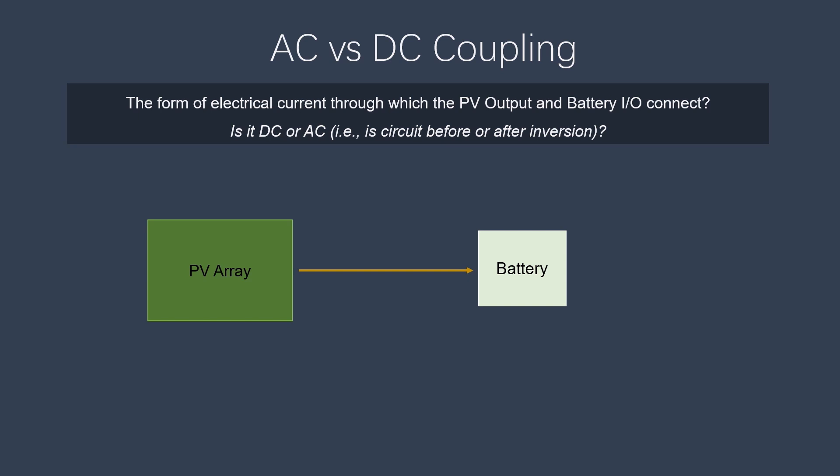But if the output of the PV array gets inverted, then rectified, that change momentarily to AC indicates this is really an AC coupled connection.